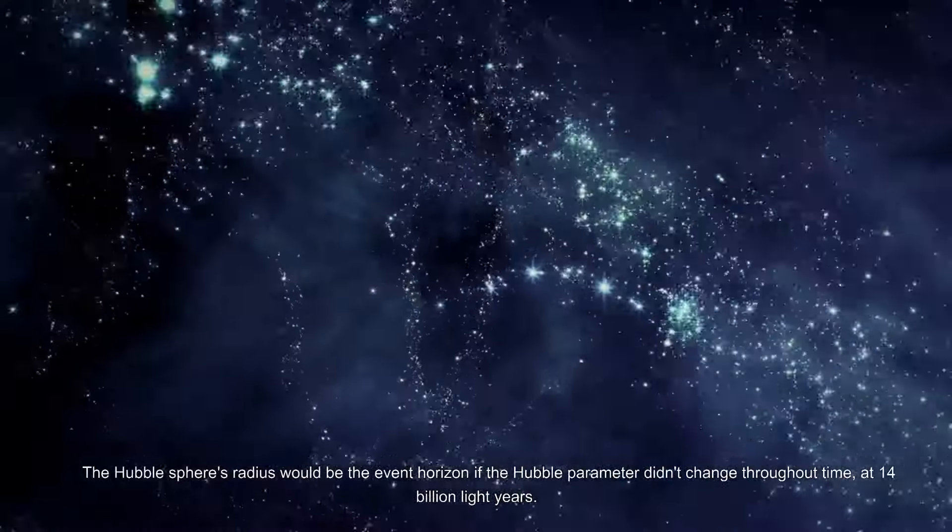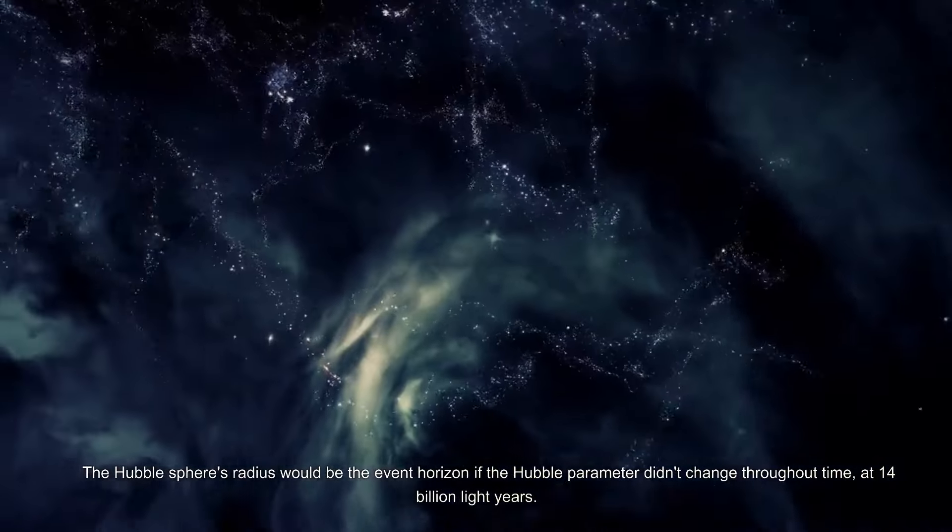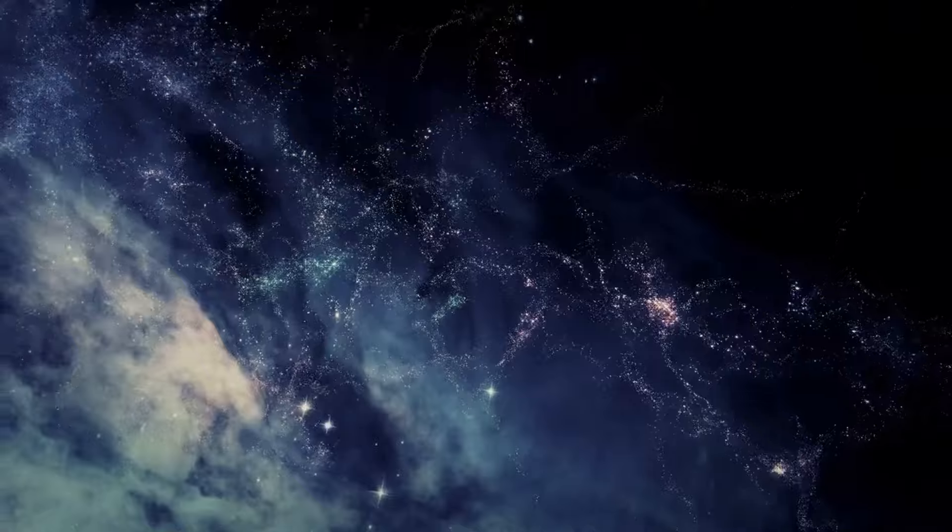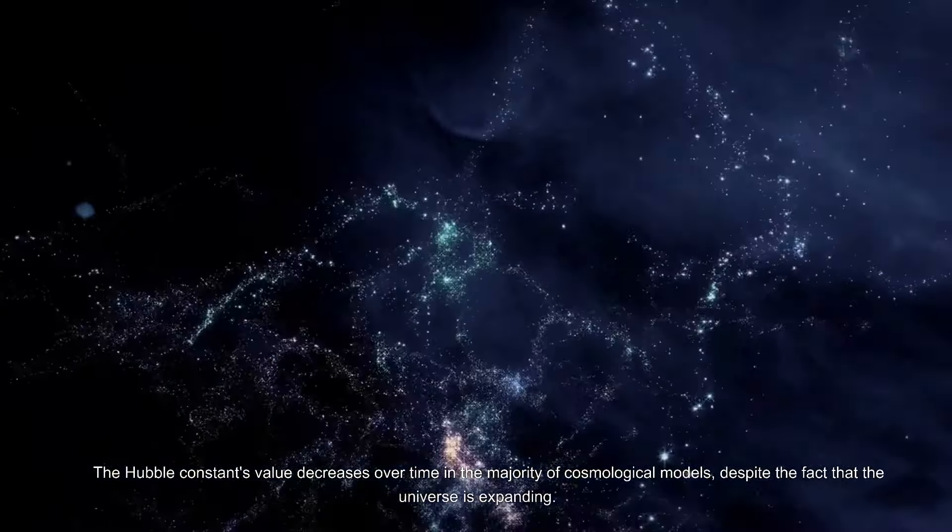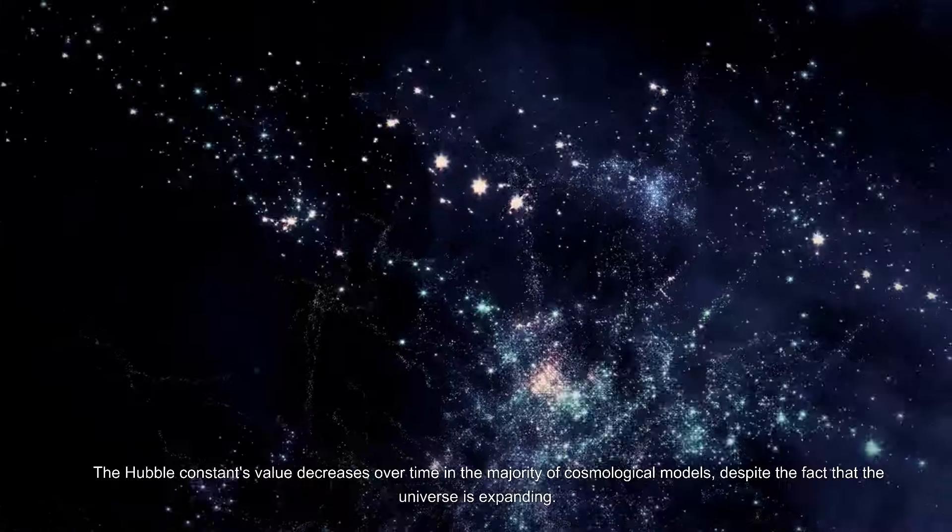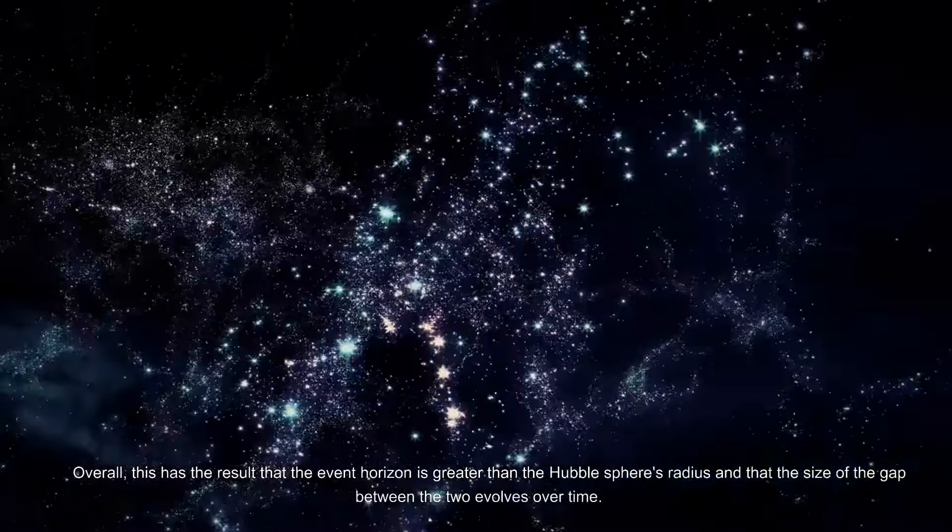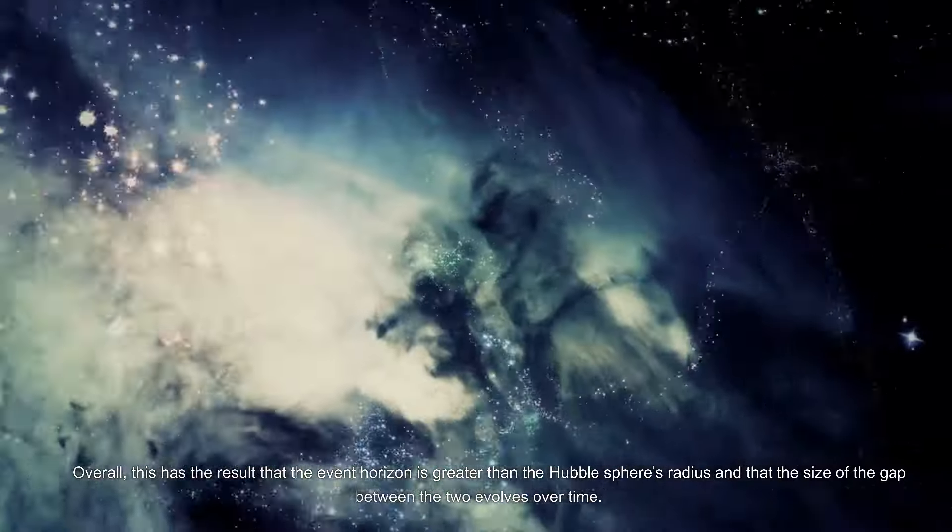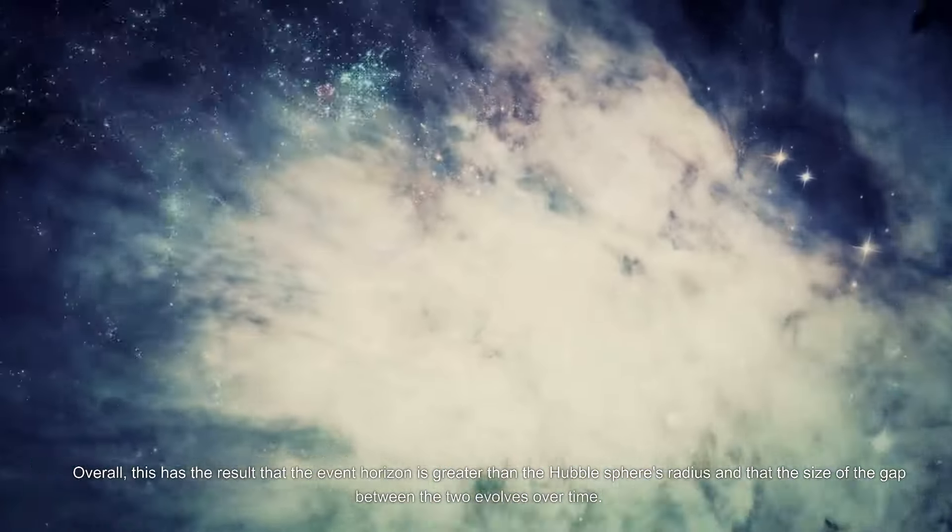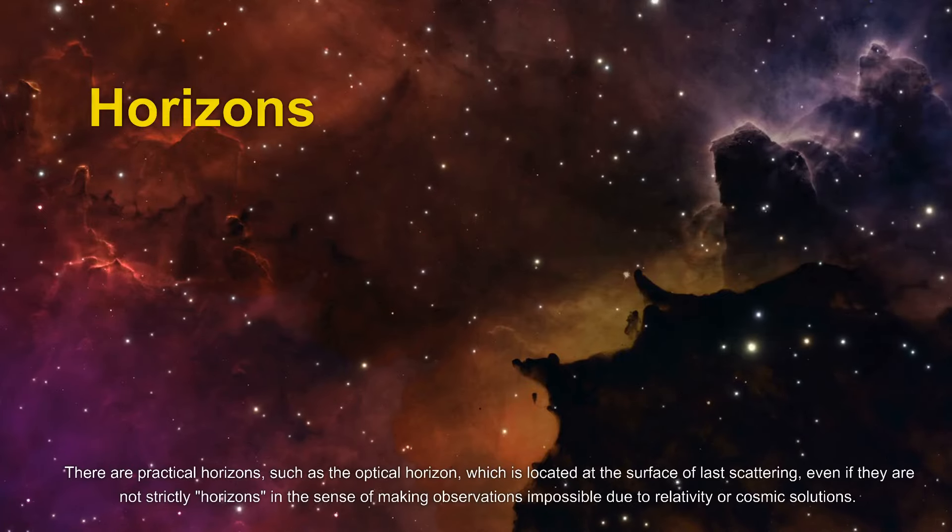The Hubble sphere's radius would be the event horizon if the Hubble parameter didn't change throughout time, at 14 billion light years. The Hubble constant's value decreases over time in the majority of cosmological models, despite the fact that the universe is expanding overall. This has the result that the event horizon is greater than the Hubble sphere's radius, and that the size of the gap between the two evolves over time.